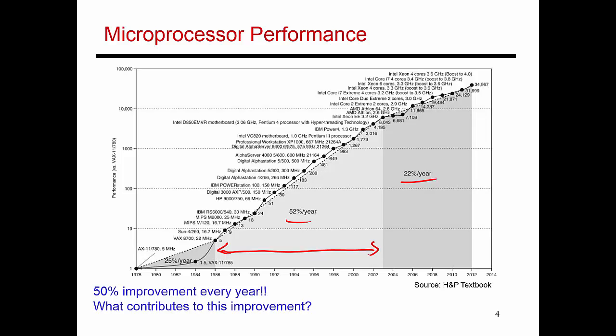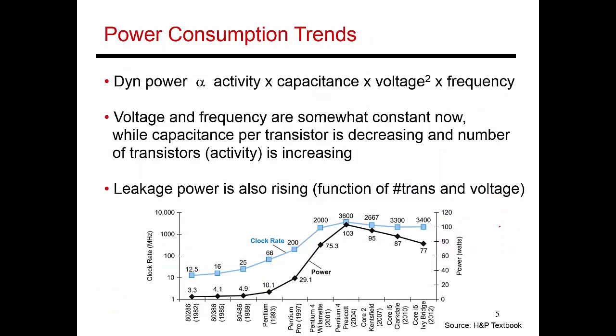Clock speeds are something we'll cover in a few videos. The bottom line is that because of architectural improvements and faster clock speeds, we saw improvement of about 50% every single year. Then around 2003, two things happened. First, we hit the power wall. Second, most of the low-hanging fruit had been picked — the easy ways to improve performance had already been employed. Any additional techniques we could think of were power hungry, and with the power wall upon us, it was hard to incorporate those features.